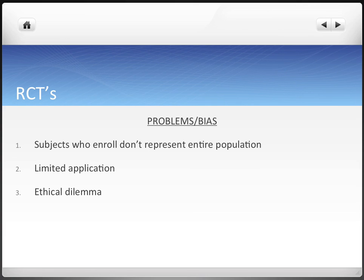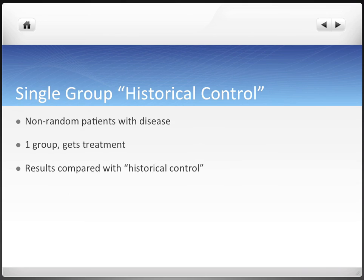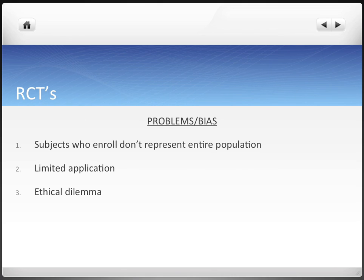Randomized control trials are really good, but they have some problems. Subjects who enroll don't typically represent the entire population — a problem with all sample populations. There are also limited applications — for example, you couldn't easily randomly assign communities for water fluoridation. And there are ethical dilemmas, since a control group should at least receive some standard of care. That's when we step in and talk about non-randomized control trials, which I'll cover in the next video. Hope this was helpful — see you next time.